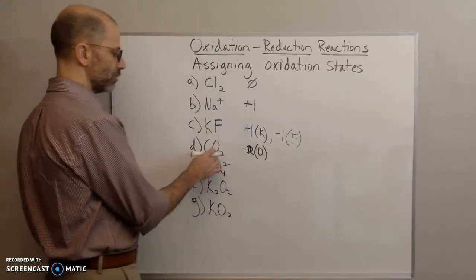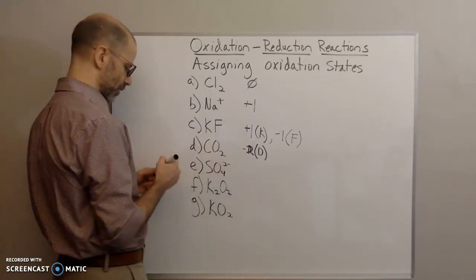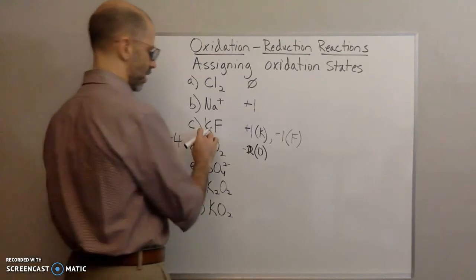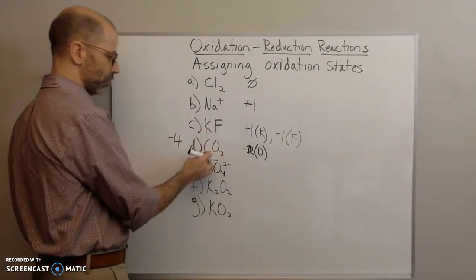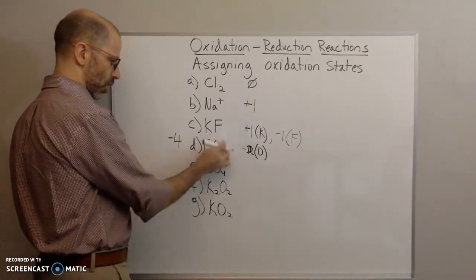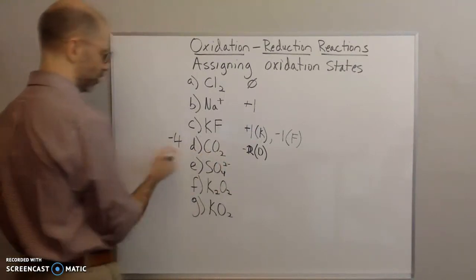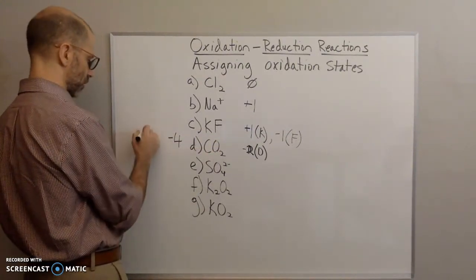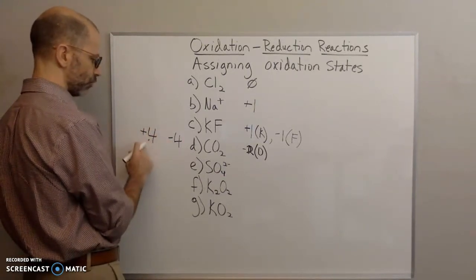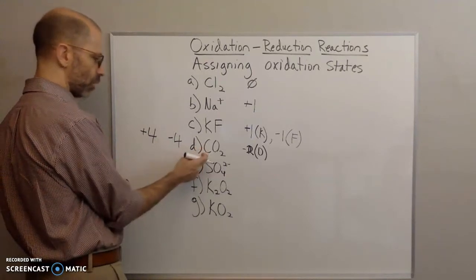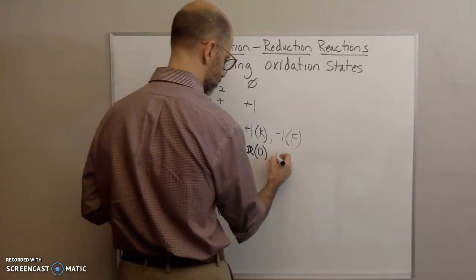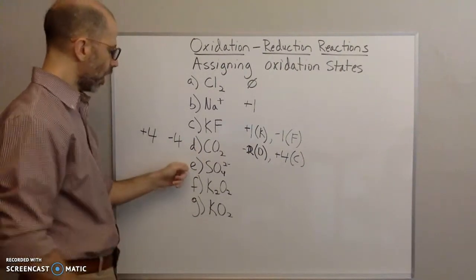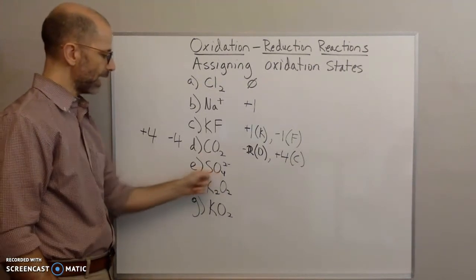Since we have two oxygens, each gets a negative two oxidation state, giving an overall contribution of negative four from oxygen. The overall charge on the molecule is zero, so carbon must contribute a positive four to balance. Since we only have one carbon, the carbon has an oxidation state of plus four in this molecule.